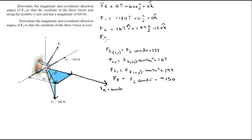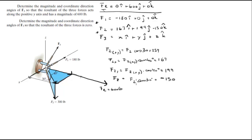F3 is what we're trying to find, so let's call it x i plus y j plus z k. We know that the sum of these three forces has to equal F of R, so we can build our equations by adding the x components, y components, and z components separately.